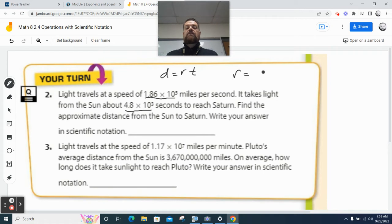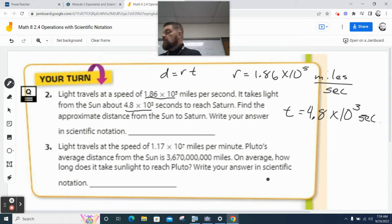The rate that they give us here is 1.86 times 10 to the 5th miles per second. And then the time is equal to 4.8 times 10 to the 3rd seconds.